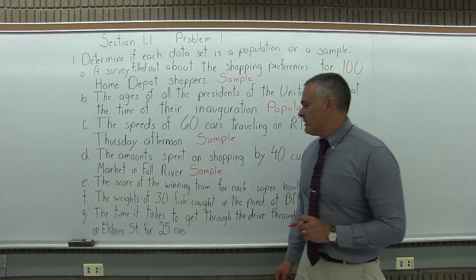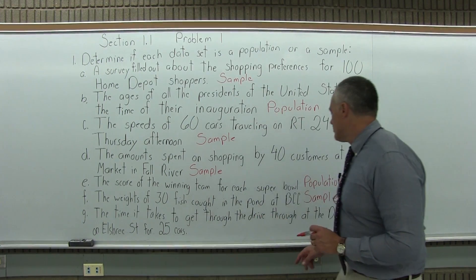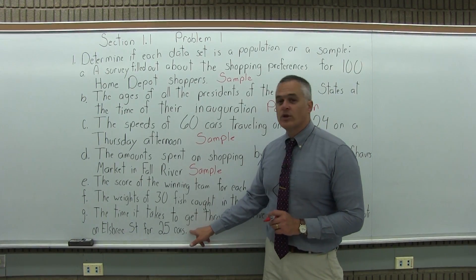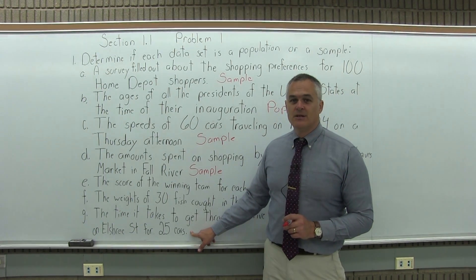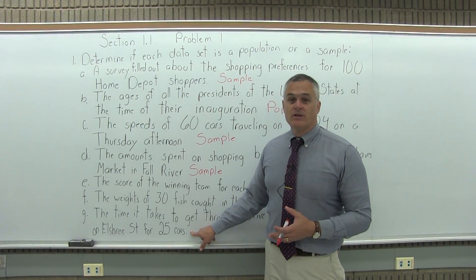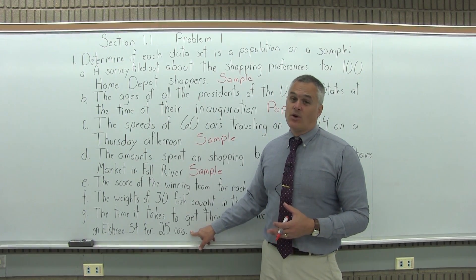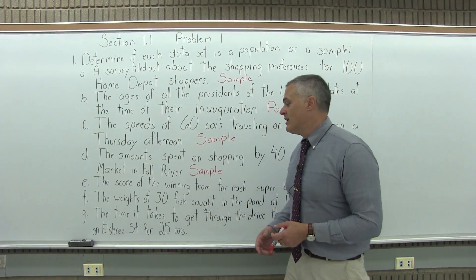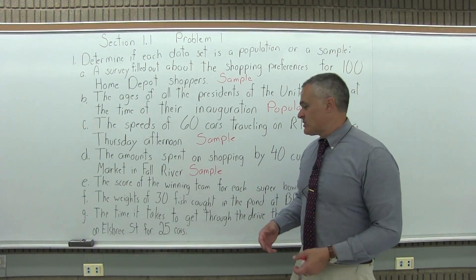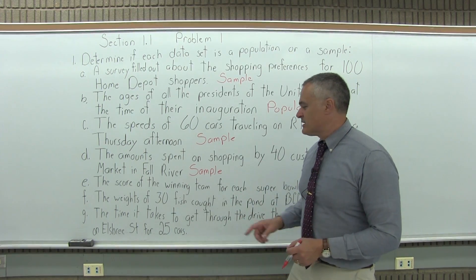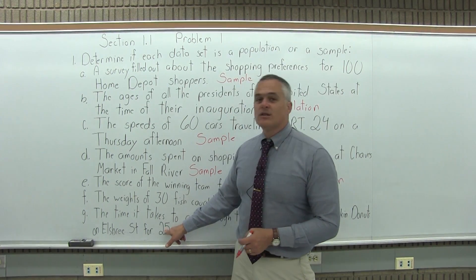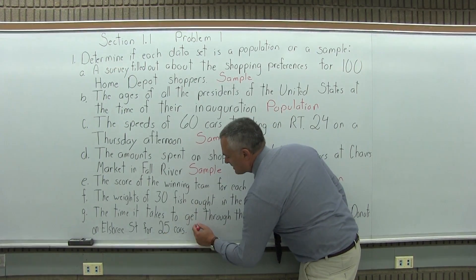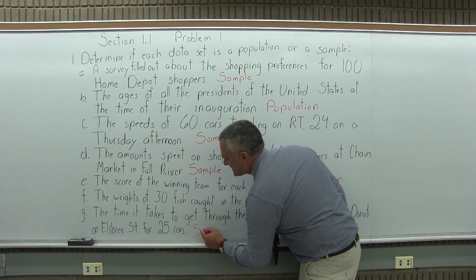Finally, part G: the time it takes to get through the drive-through at the Dunkin' Donuts on Ellsbury Street for 25 cars. The entire group you're interested in is probably all the cars that go through that drive-through and how long it takes — the restaurant owner wants to make that a speedy process. By looking at these particular 25, you're only looking at part of the group you want to study, which makes the last one also a sample.